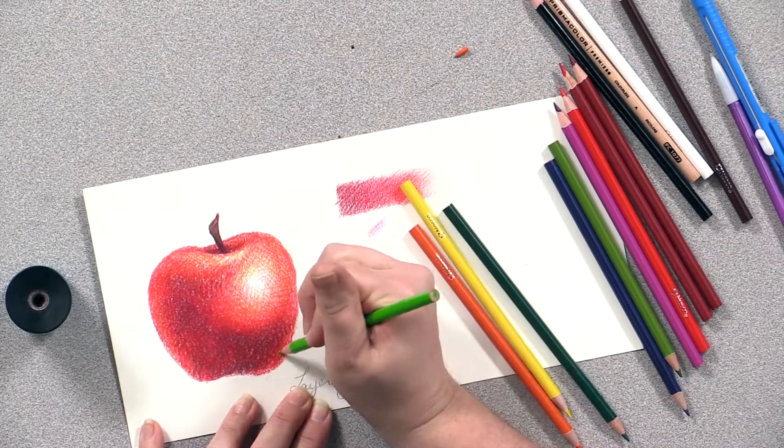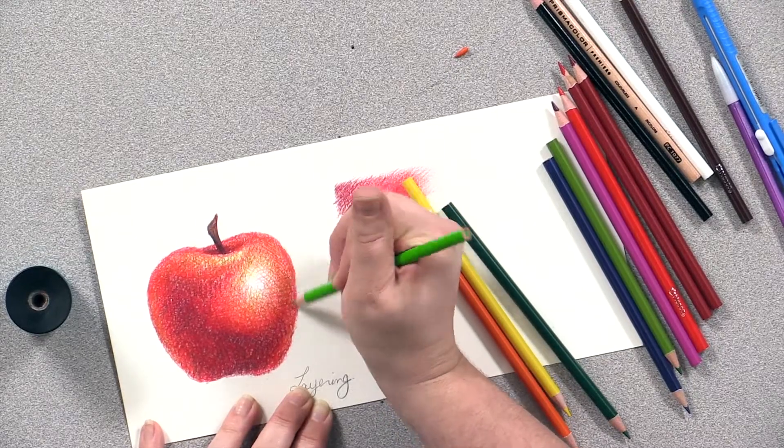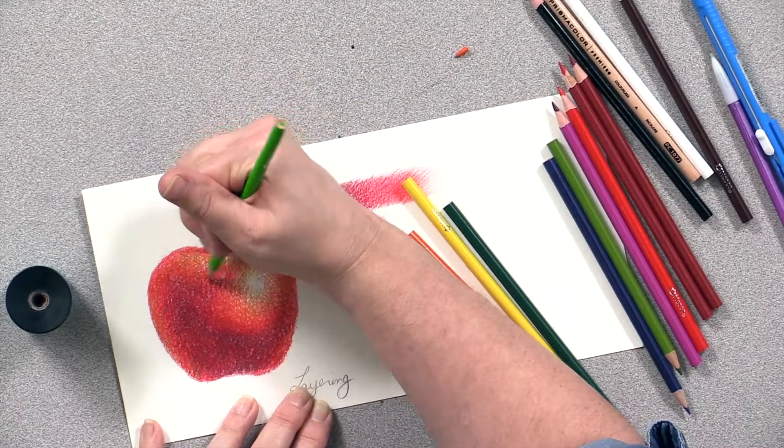So I'm going to play with some yellows and some oranges in the lighter sections of my apple, and then maybe come in with some light green and tone that as well.